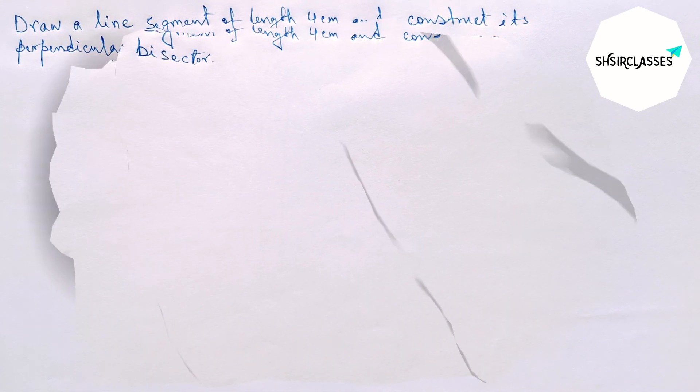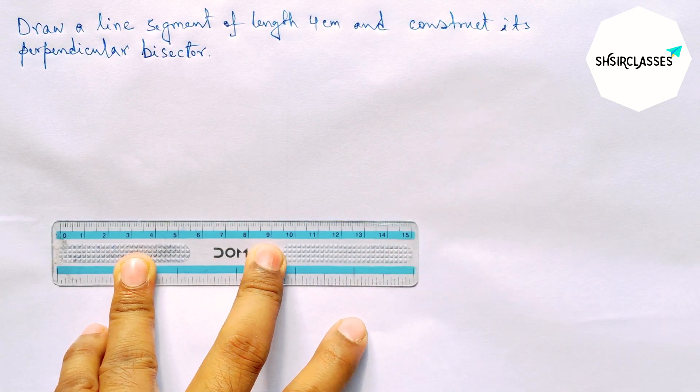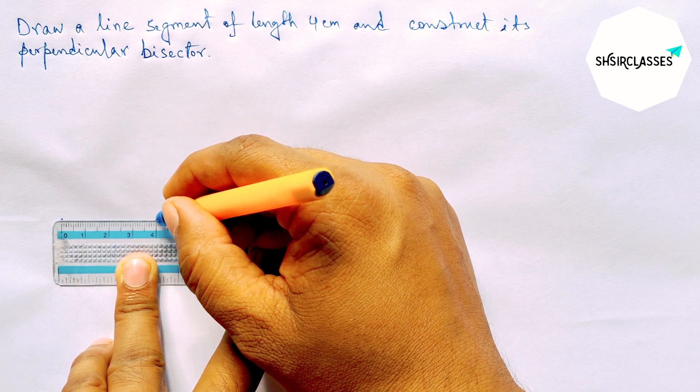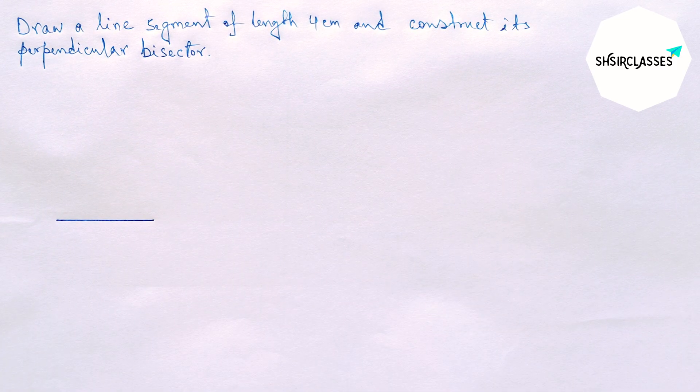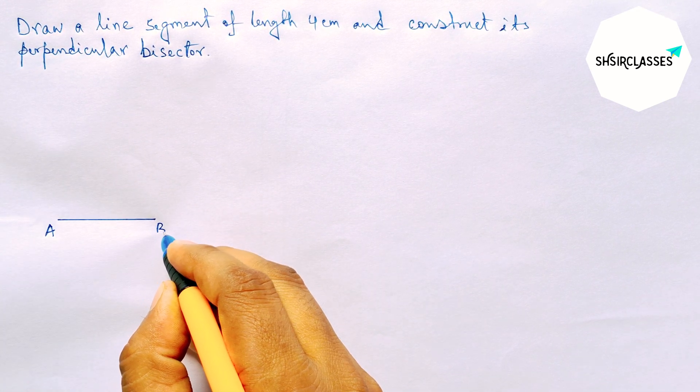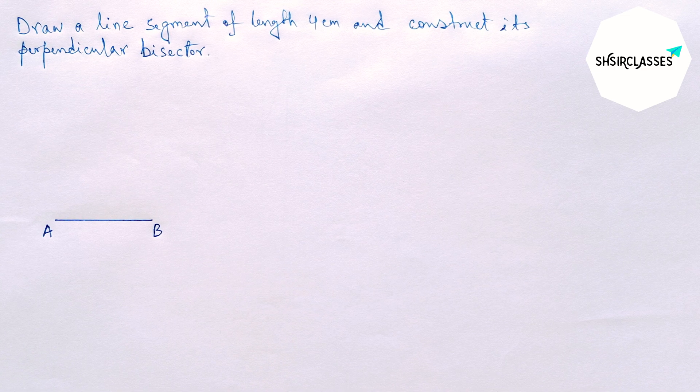So let's start the video. First of all, let us draw here a line segment of length 4 centimeters. This is a 4 centimeter line segment. Now labeling here at point A and here, sorry, B.